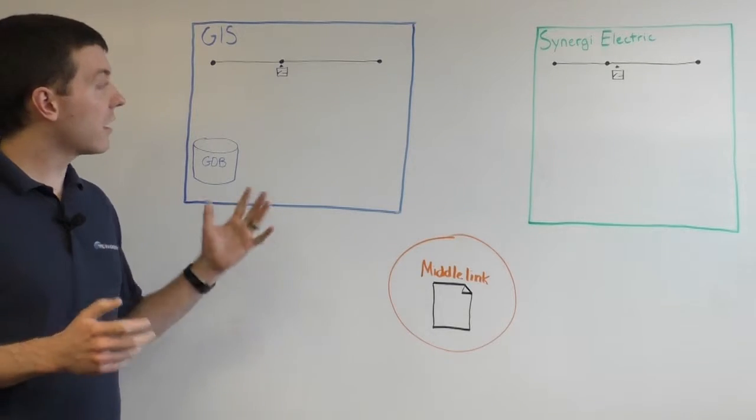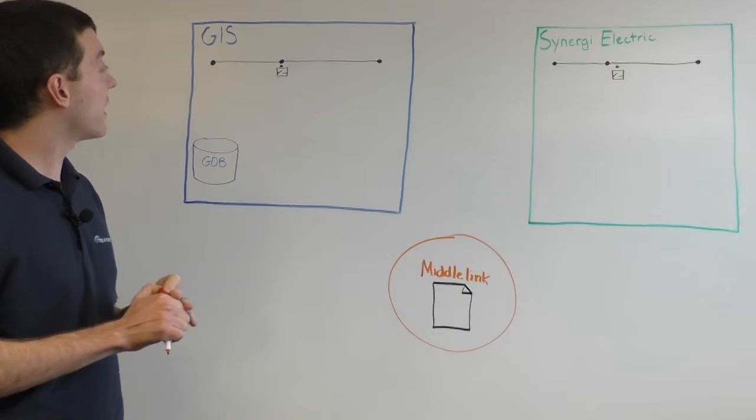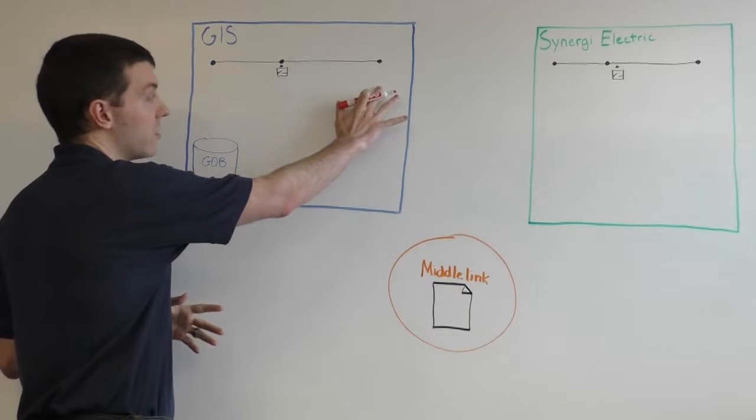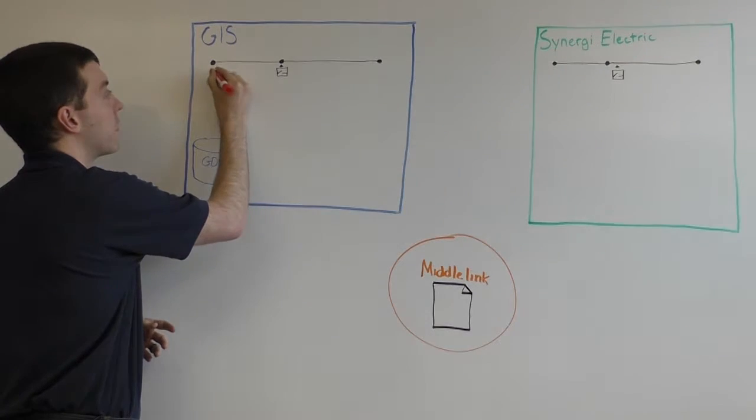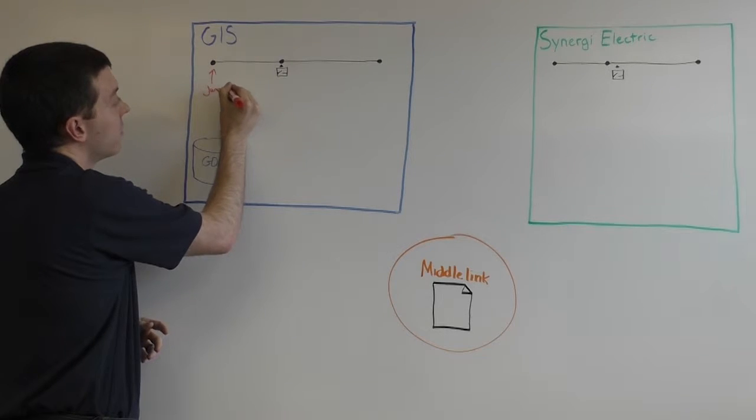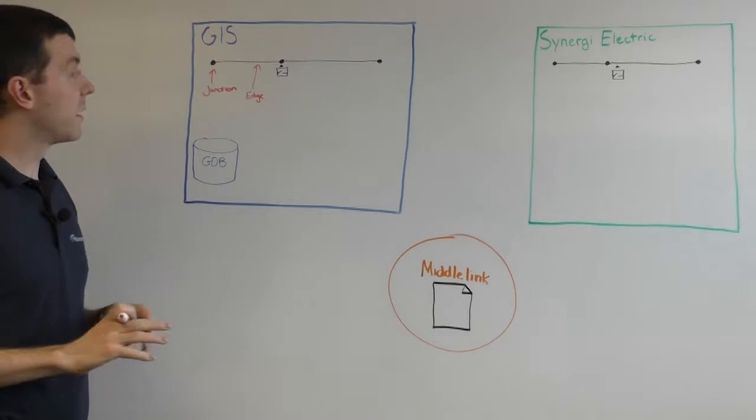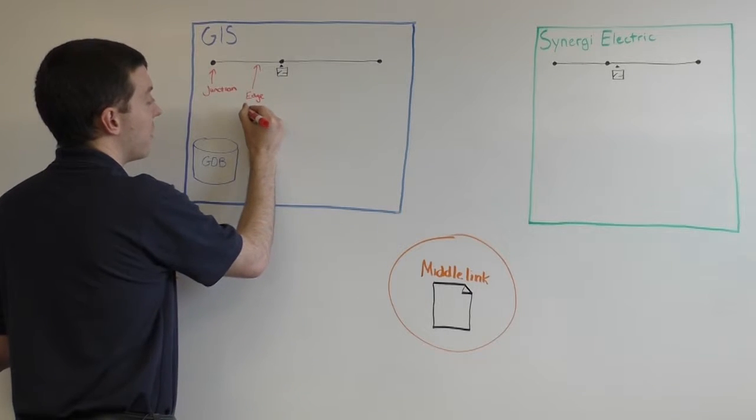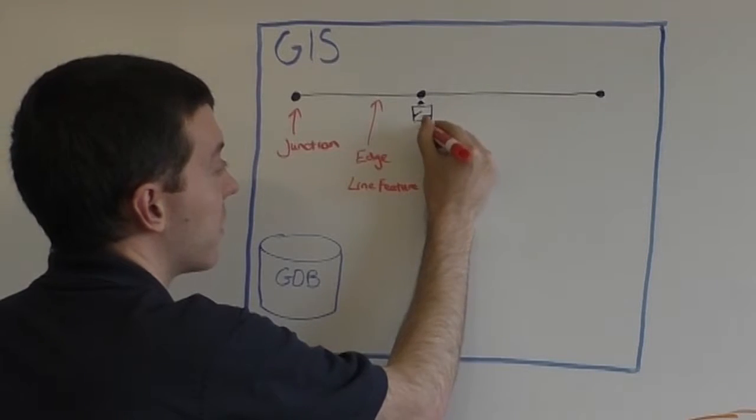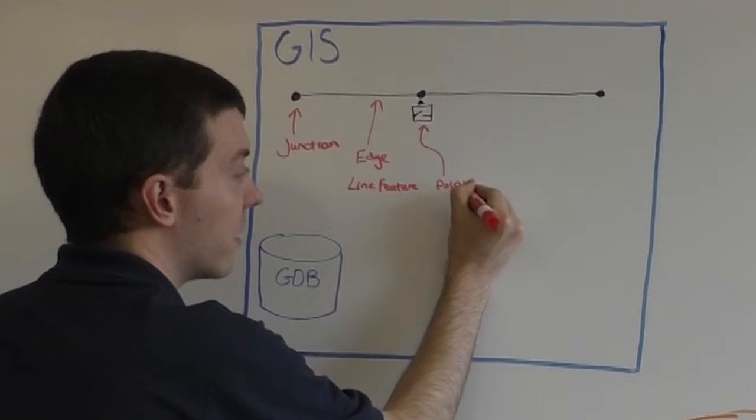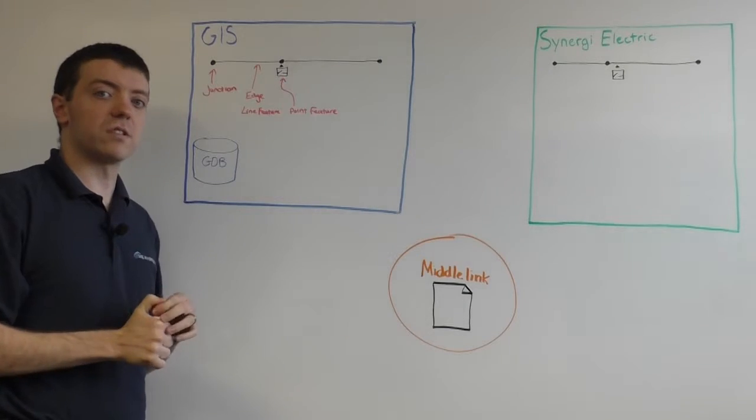So essentially, there are a lot of differences between GIS and Synergy Electric data, which is a lot of the complication in the software in the first place. In GIS, for a given geometric network, you have the concept of edges and junctions. A point here on the map would be considered a junction, a line is considered an edge. And this directly corresponds to features on the map as well, so an edge is also going to be a line feature, and a junction, such as this one we're symbolizing, say a switch here, is going to be a point feature. So it's fairly straightforward, the edges and the junctions line up directly with features on the map.